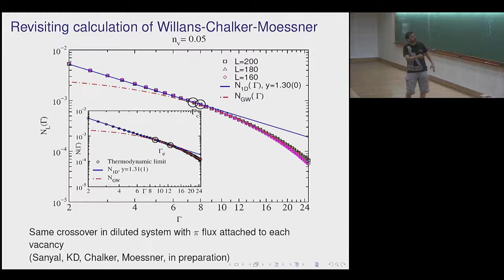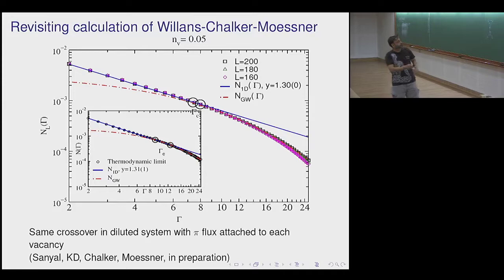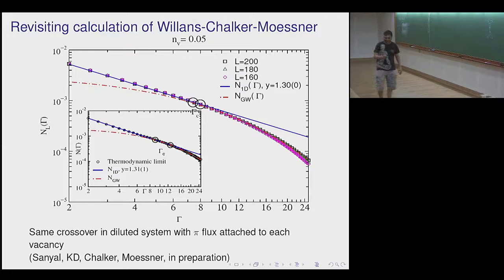The crossover is non-universal and depends on how you put in the vacancies, which controls the number of zero modes. The real answer seems to be: the non-zero energy states are exactly Gade-Wegner, plus there's a delta function at zero energy — a non-zero density of exact zero modes, not broadened by anything. And in fact these zero modes are robust to bond disorder.